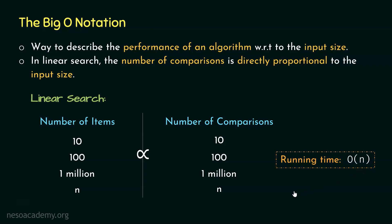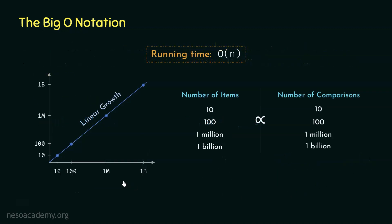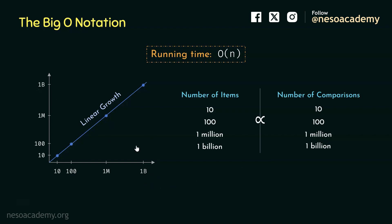Let's visualize the running time through a graph. The x-axis represents the number of items and the y-axis represents the number of comparisons. If there are 10 items, there are 10 comparisons; 100 items gives 100 comparisons; 1 million items gives 1 million comparisons; and 1 billion items gives 1 billion comparisons. The growth rate is linear — as the size of the input increases, the number of operations increases with the same rate.